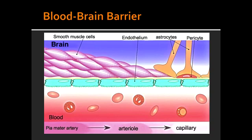What permeates the blood-brain barrier freely? Hypothalamic inputs and outputs permeate the blood-brain barrier. Additionally, the blood-brain barrier helps prevent bacterial infection from spreading into the CNS, and it also restricts drug delivery to the brain.